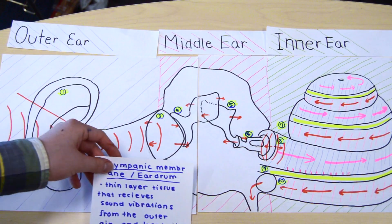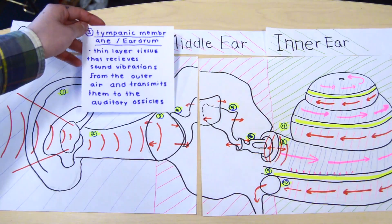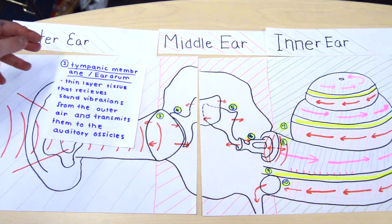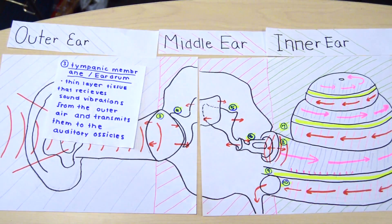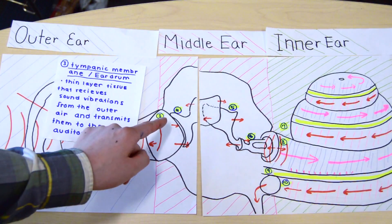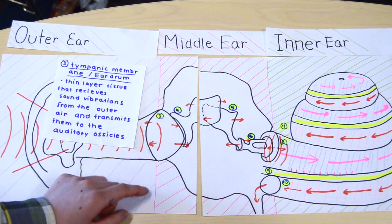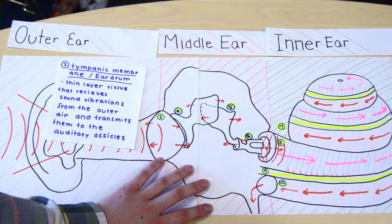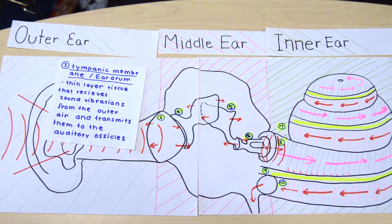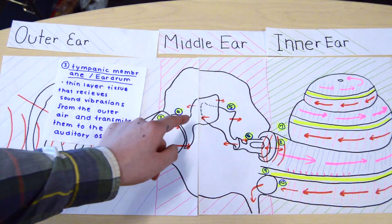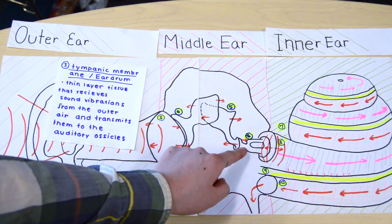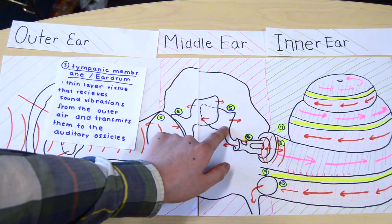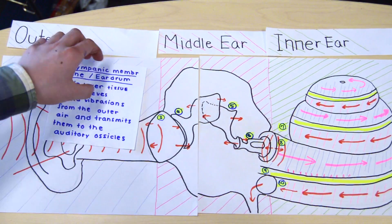The tympanic membrane is a thin layer of tissue that receives sound vibrations from the outer ear and transmits those vibrations to the auditory ossicles, which are the three bones within the middle ear.